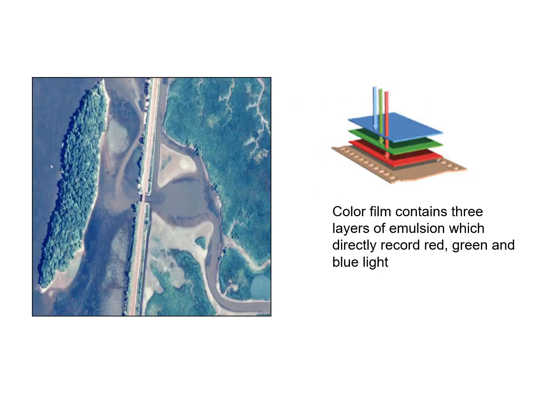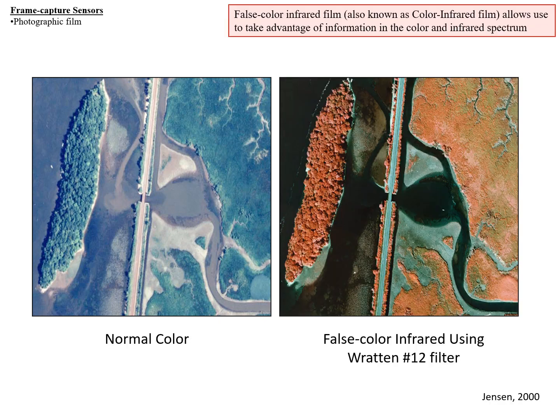Color film has three layers of emulsion which record red, green, and blue light. There is a color image of that same Tivoli Bay we looked at before. There are two kinds of color images: one is normal color — color as we see it — and then false color infrared.